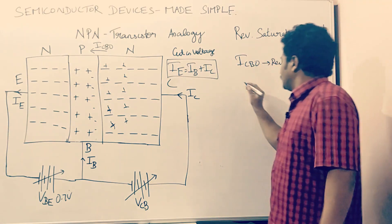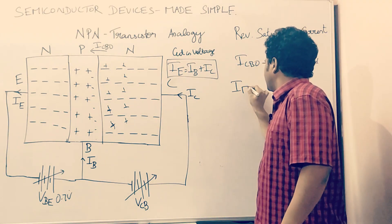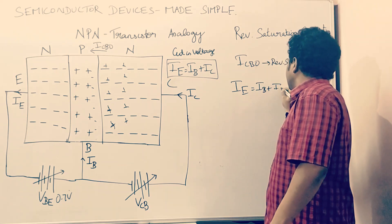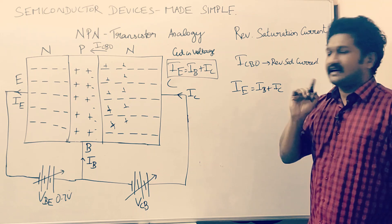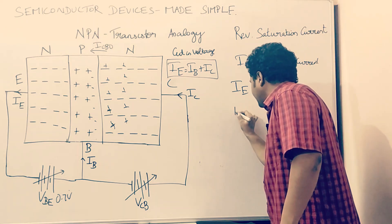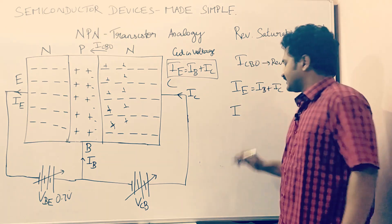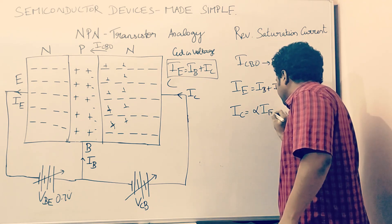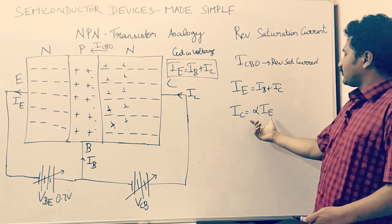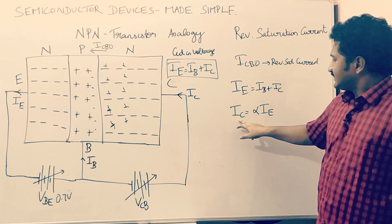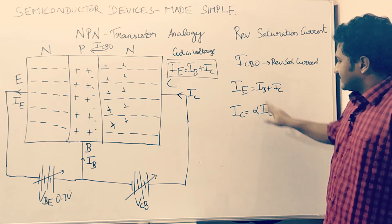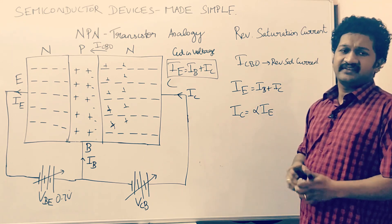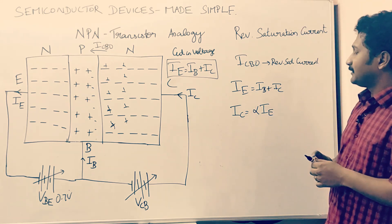Coming to the equation: IE equals IB plus IC. This is the universal transistor current equation. I write another equation: IC equals alpha times IE. What is the meaning of this expression? IC is the collector current, IE is the emitter current, and alpha is a multiplication coefficient.